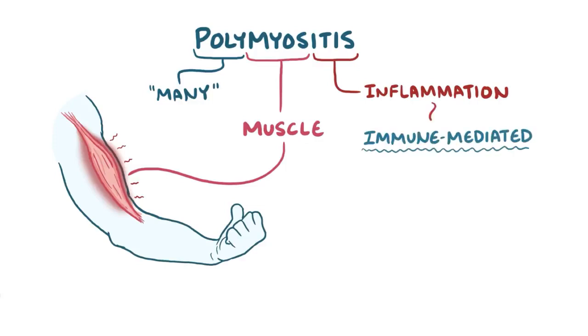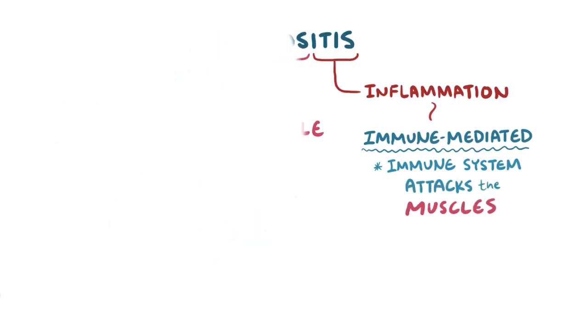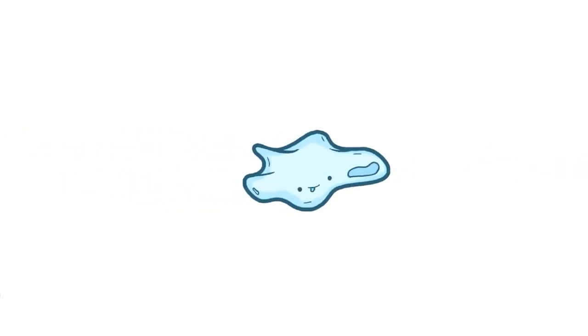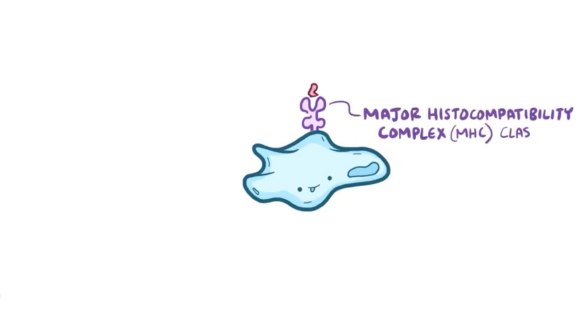Polymyositis is an immune-mediated disease, meaning that the immune system attacks the muscles in our own body. Normally, the cells of the immune system are ready to spot and destroy anything foreign that could cause the body harm. To help with this, most cells in the body have a set of proteins that combine together to form something called a major histocompatibility complex, or MHC, class 1 molecule that sits on the surface of their cell membrane.